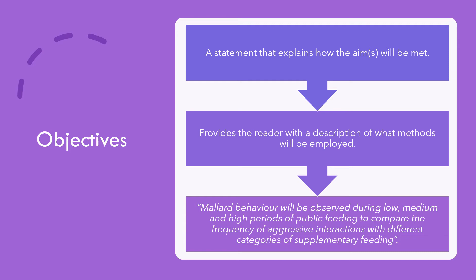So how will we do that? Our objective would be to look at the birds and record instances of aggression. For example: 'Mallard behaviour will be observed during medium, low, and high periods of public feeding, and we will compare the frequency of aggressive interactions across these different categories of supplementary feeding.' We've explained what we're going to do, how we will do it, and what population we will use. So we have turned our aim into an objective by explaining where, on what, and how we will collect our data. The objective comes after the aim has been written.